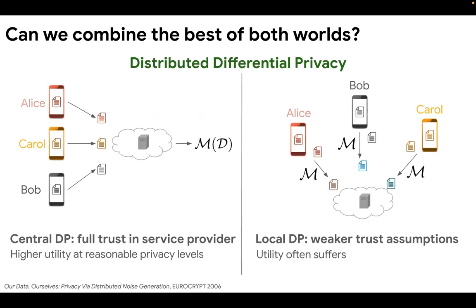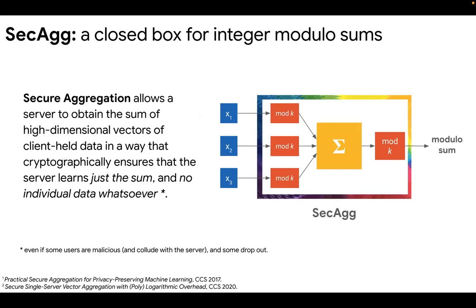A natural question to ask then is: can we somehow combine the best of both worlds? The answer is yes. We can use a version of differential privacy called distributed differential privacy, which offers privacy guarantees and trust models similar to local DP, while retaining the high-quality model performance of central DP. The word distributed here can be interpreted as distributing the trust away from the central server. For our distributed DP model, we'll rely on secure aggregation, which is a cryptographic protocol to sum high-dimensional vectors in a way that ensures the server learns just the sum and no individual data whatsoever. SecAgg is a mature technology currently running in production at scale, and for the purpose of this video we'll just treat it as a black box that securely computes integer modular sums for us.